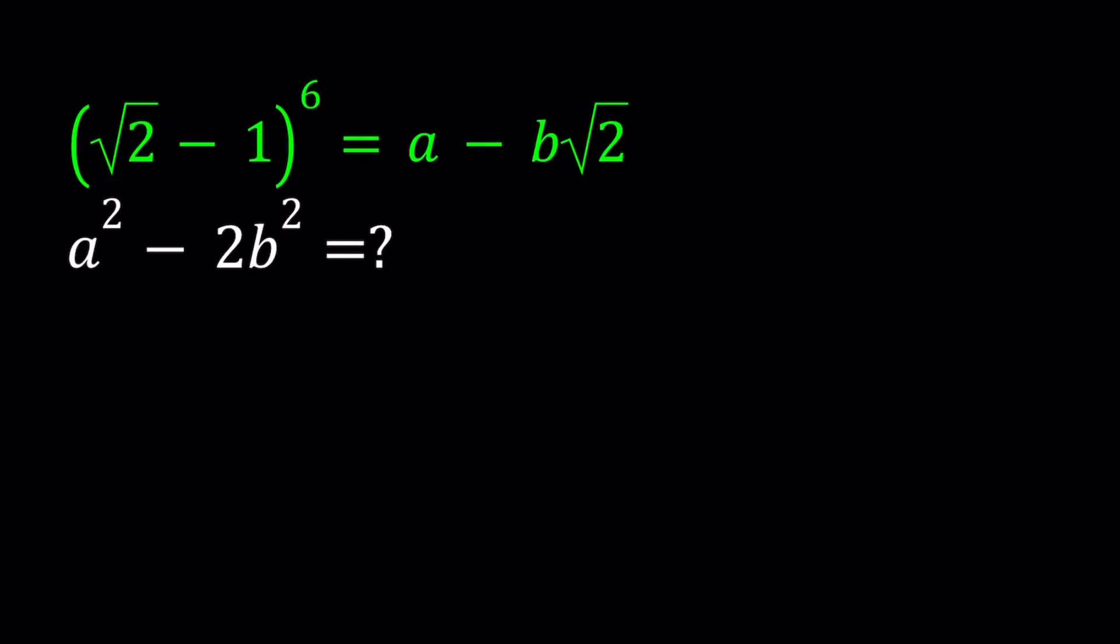Hello everyone. In this video, we're going to be solving an interesting problem which is kind of homemade. We have square root of 2 minus 1 to the 6th power equals a minus b times the square root of 2. In this case, a and b are integers.